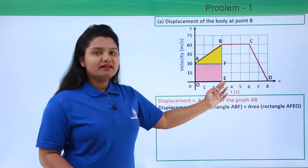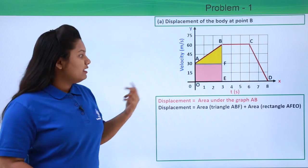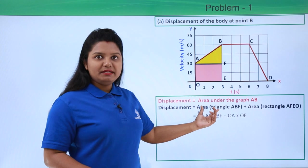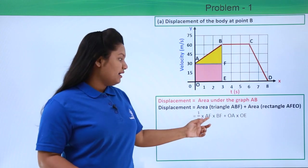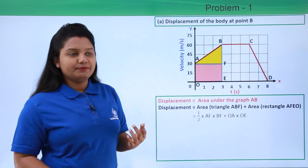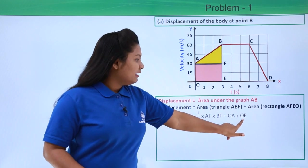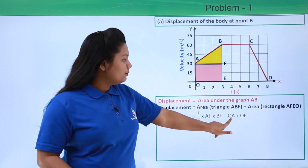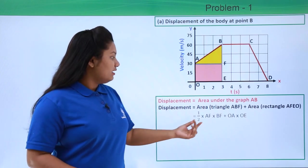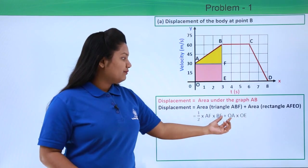For the rectangle, OE is the length and OA is the breadth. So the area of triangle ABF is half times AF times BF, plus OE times OA for the rectangle. We need to figure out the values of all four quantities — AF, BF, OA, and OE — from the graph itself.